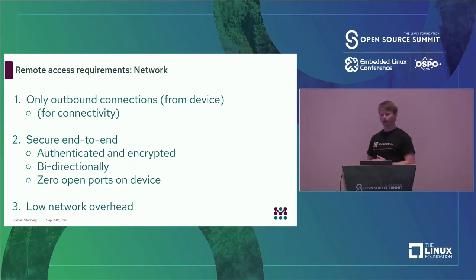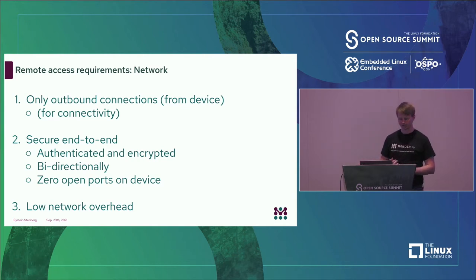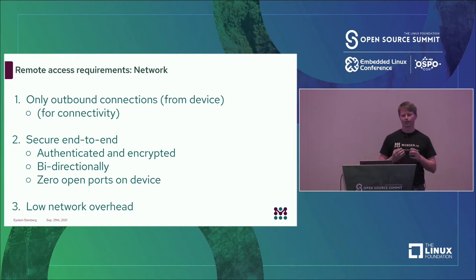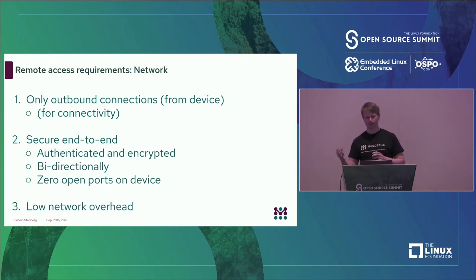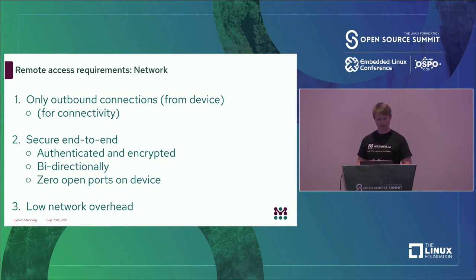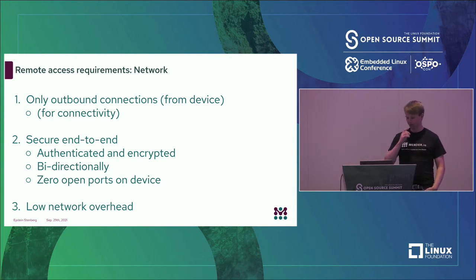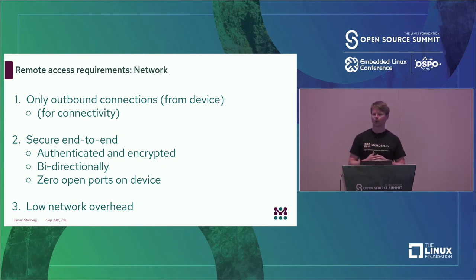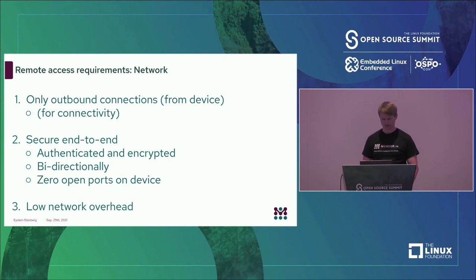In summary, from the network we have some requirements for remote access in IoT. You can only do outbound connections. It needs to be secure end-to-end, so you need to authenticate both ends — both the device and the laptop or server — and encrypted for confidentiality, because there might be secrets going through. And it's highly desirable that you don't have any open ports on the device, for more defense in depth. And low network overhead.